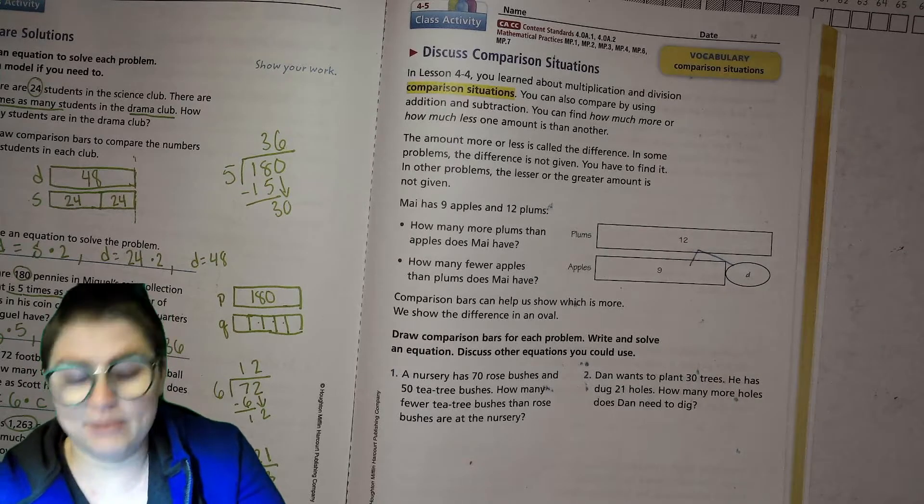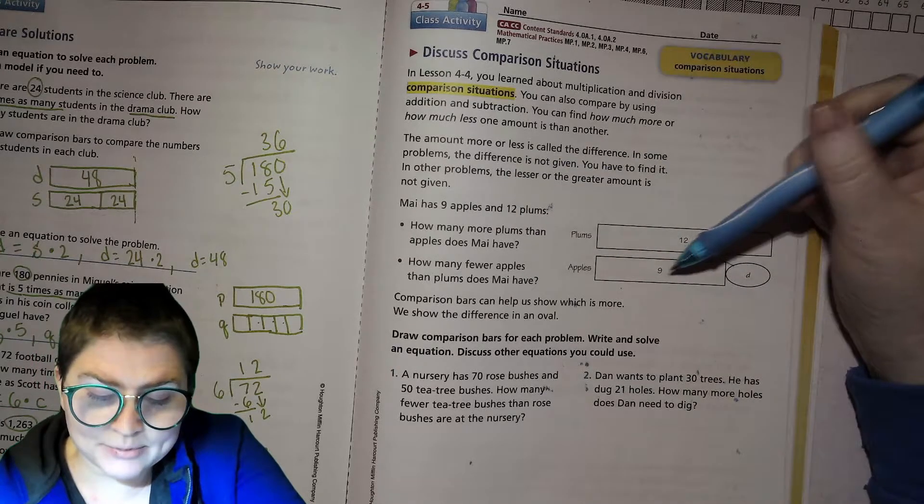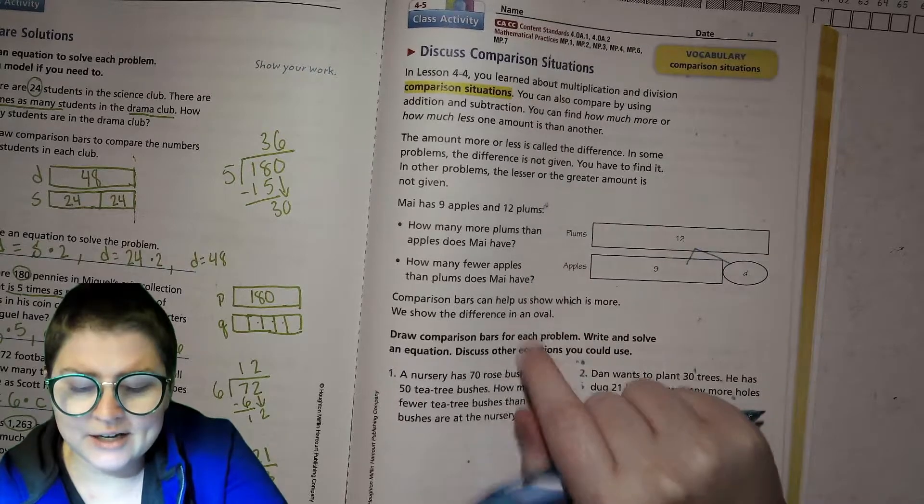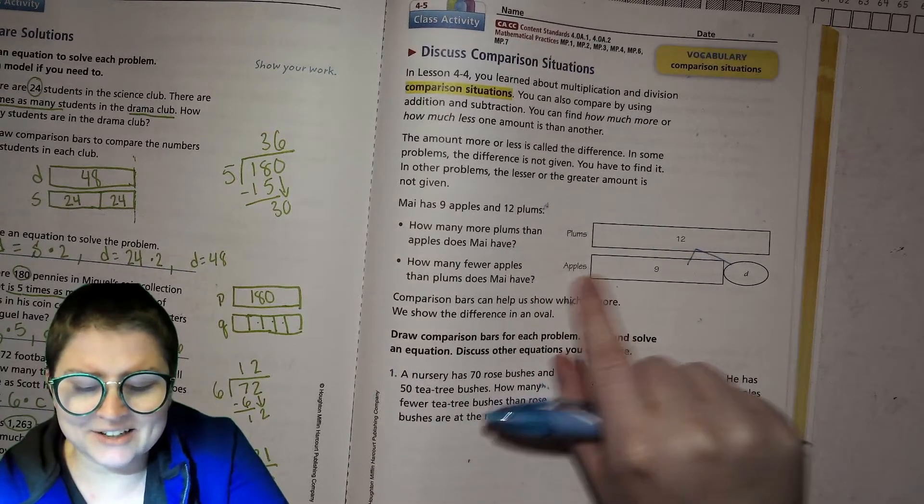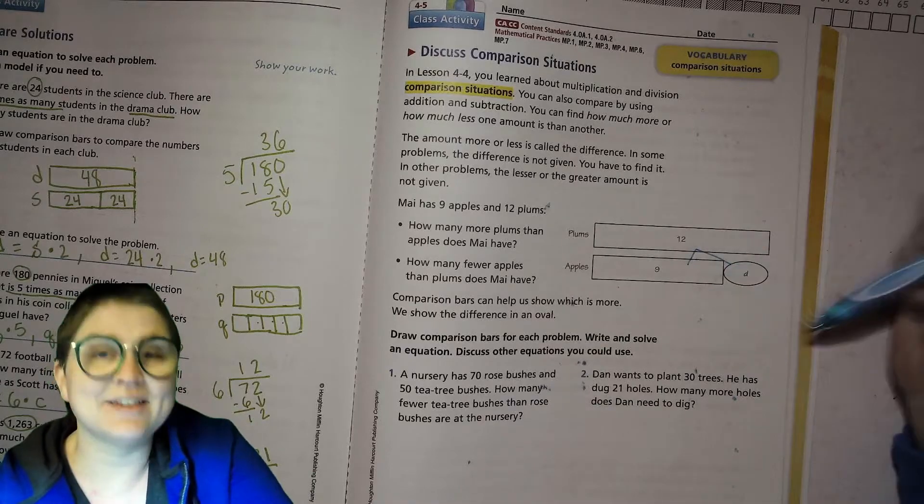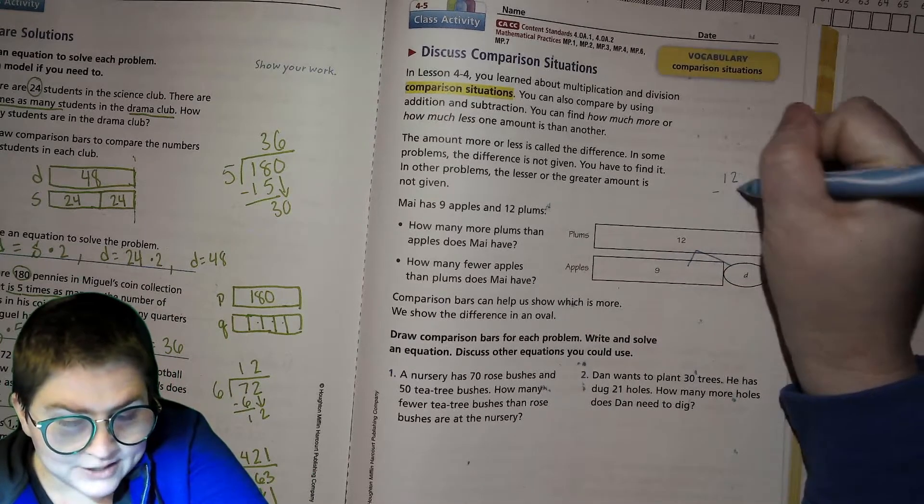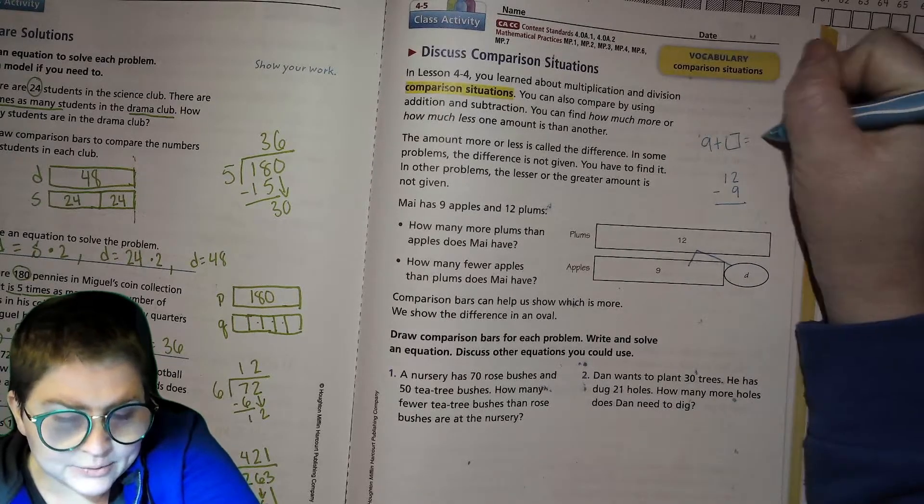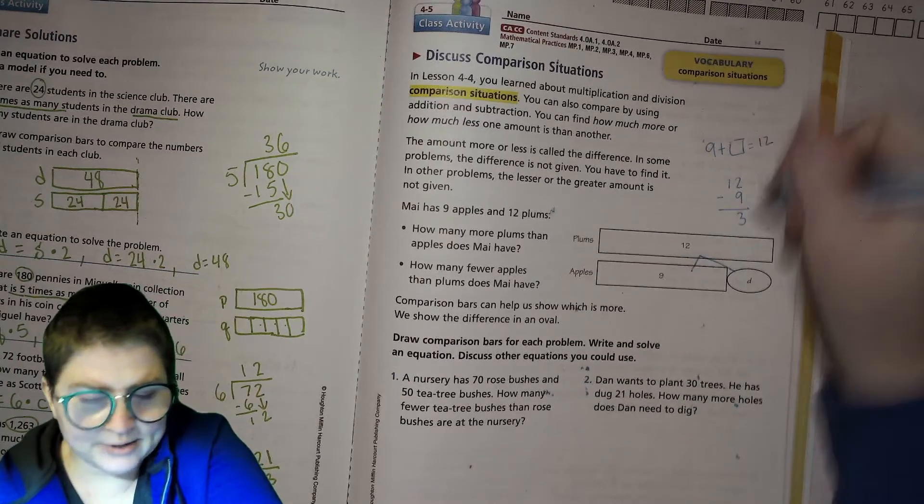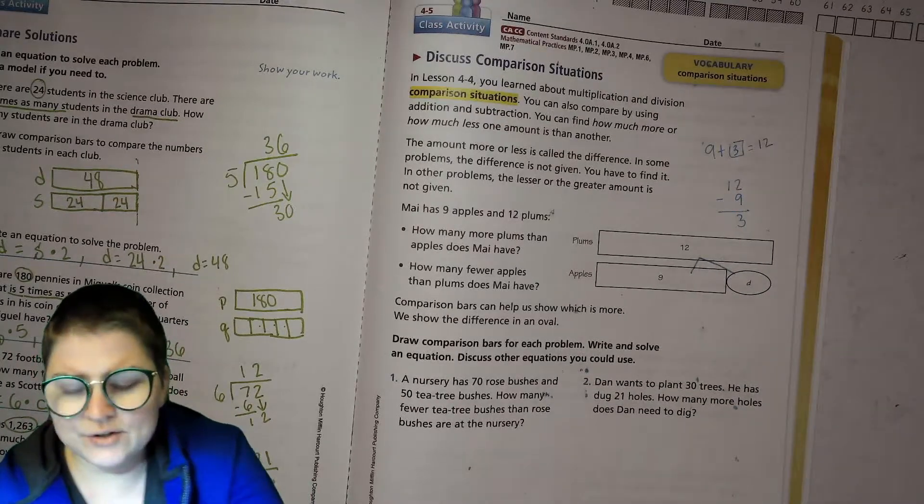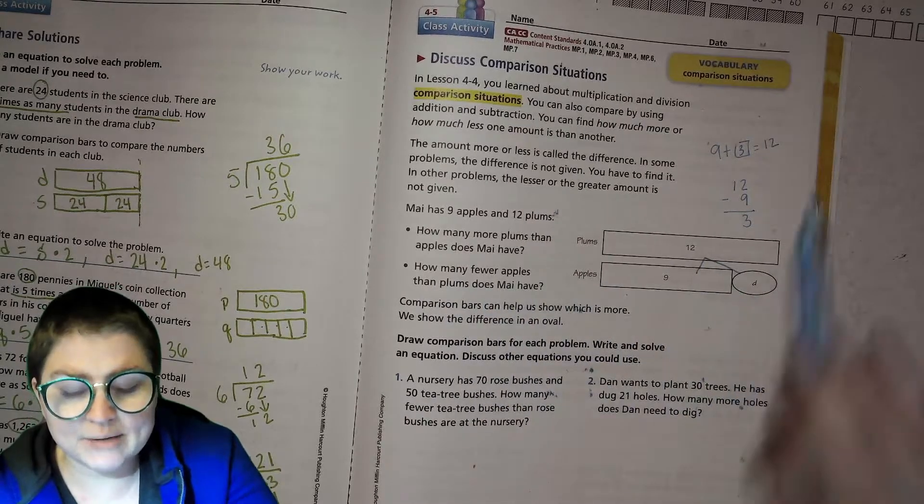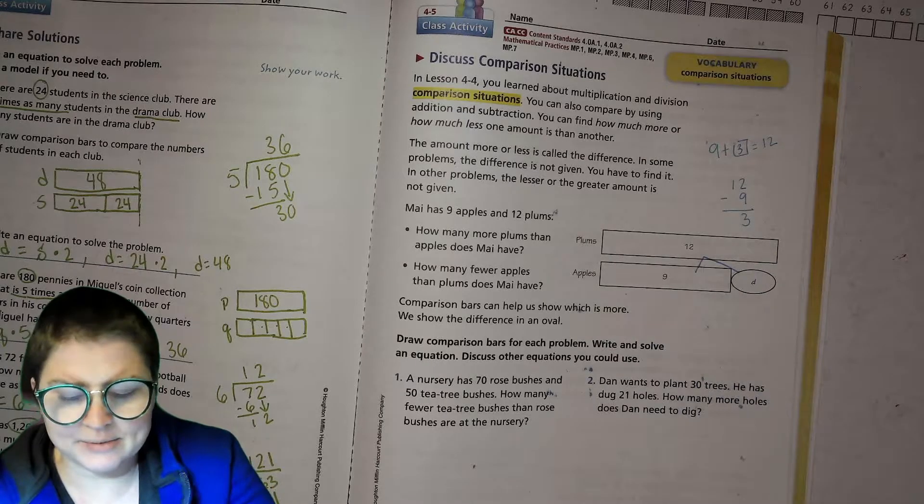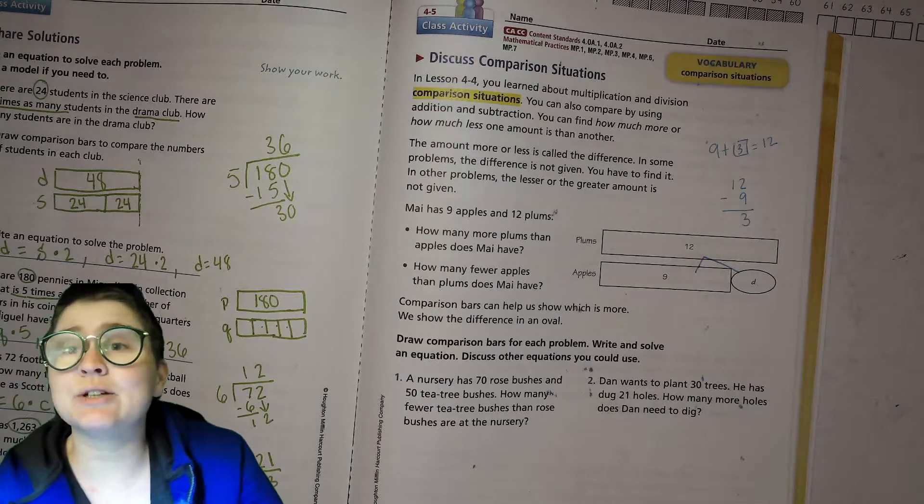Mia has 9 apples and 12 plums. The big amount gets the big bar - that's 12 - and the little amount is the little bar. Then to find the difference you're simply going to do 12 take away 9, or 9 plus what equals 12. In both cases that's 3. So she has 3 more plums than apples, and she has 3 fewer apples than plums. Should be familiar.